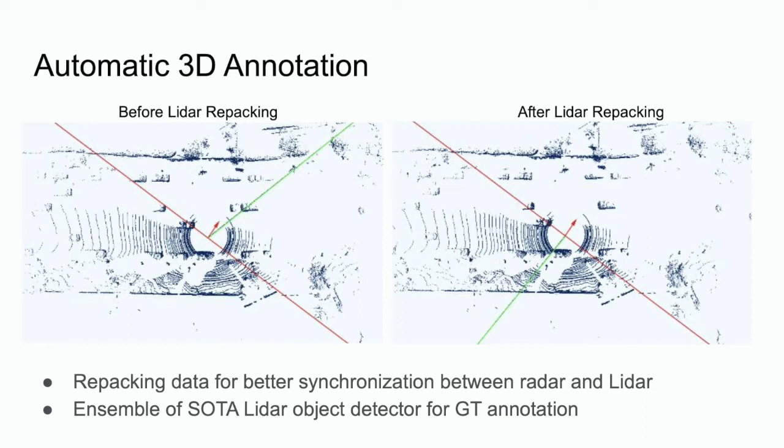We used the LiDAR data to automatically obtain ground truth annotation. In order to get accurate perception results on LiDAR data, we combined several state-of-the-art 3D object detection algorithms, namely Complex-YOLO and PointRCNN, through test-time augmentation and model ensemble to achieve high performance. In order to accurately transfer the LiDAR annotation results to radar, we need accurate calibration between LiDAR and radar. Specifically, we repacked the LiDAR data to avoid any inconsistency caused by LiDAR's rolling shutter effect. The two images illustrate one such example before and after applying our correction.